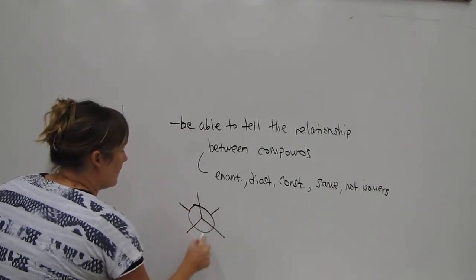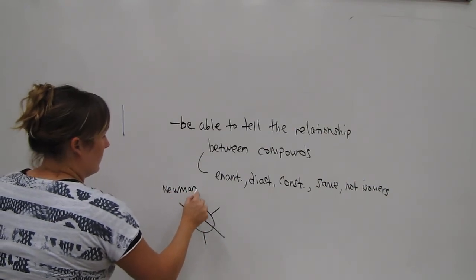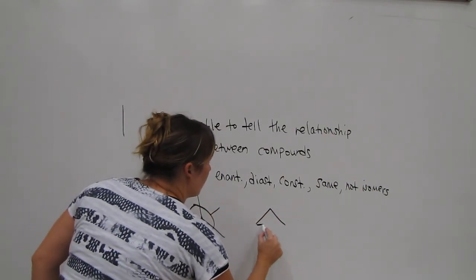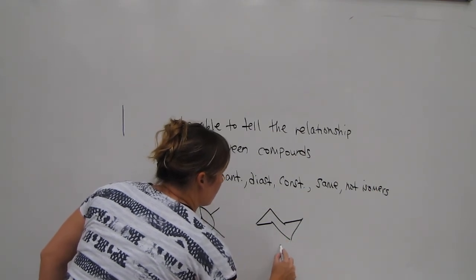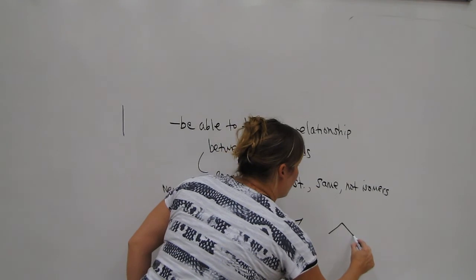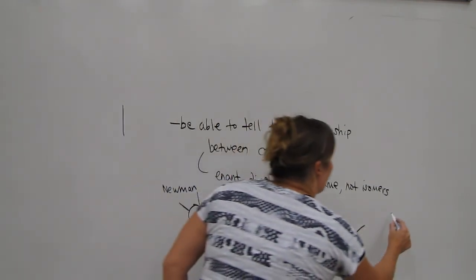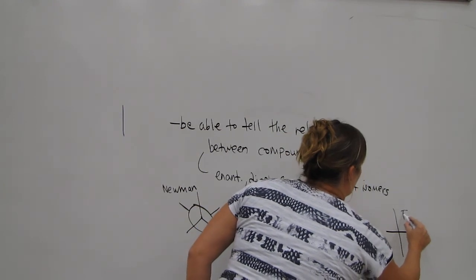And you need to be able to do this in all different drawing notations. So you could have the Newman projection, you could have the chair conformation, or you could just have the regular bond line drawing, or you could have Fischer.